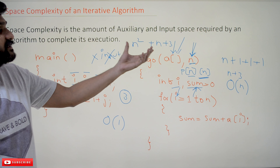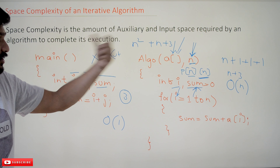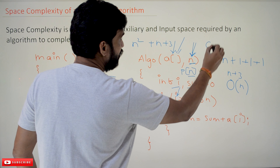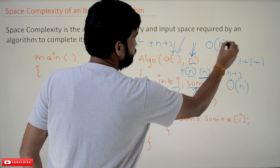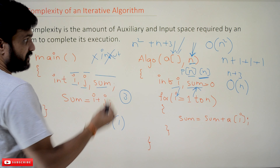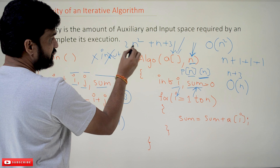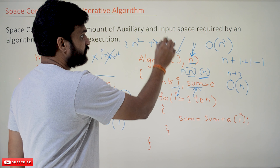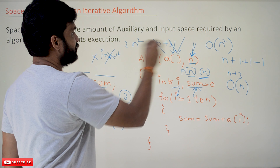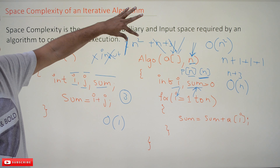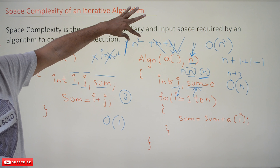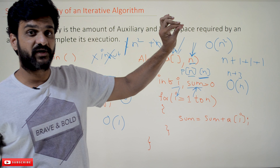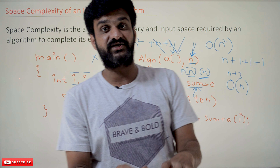The total space required by this algorithm is n² + n + 3. Considering the order of growth, since lower-order terms are dropped, the space complexity is O(n²). So the amount of space required by this algorithm is O(n²).